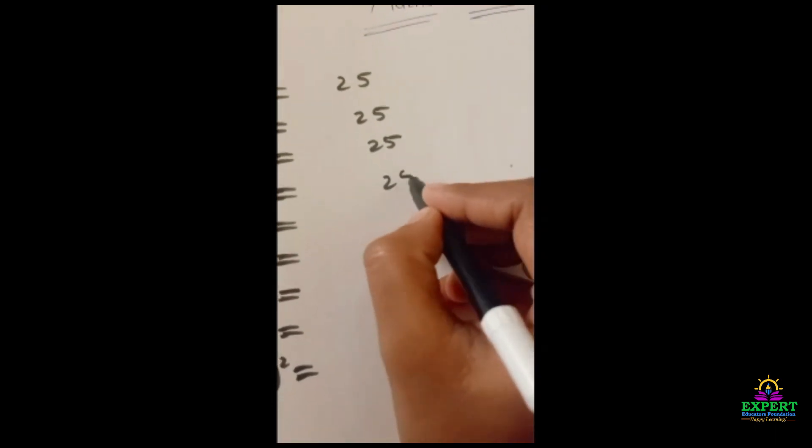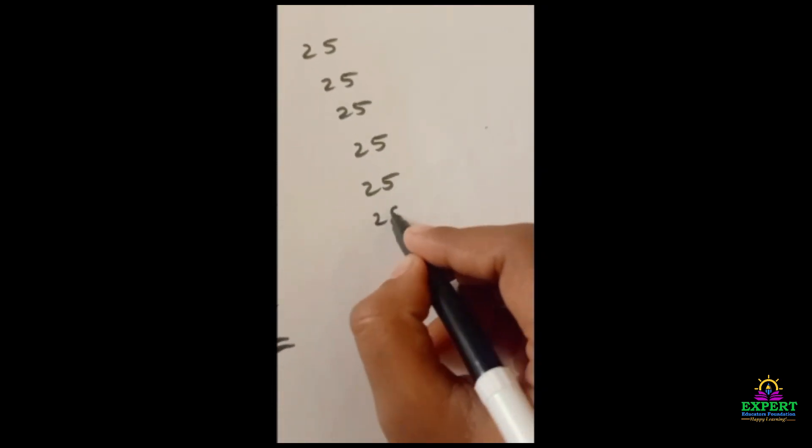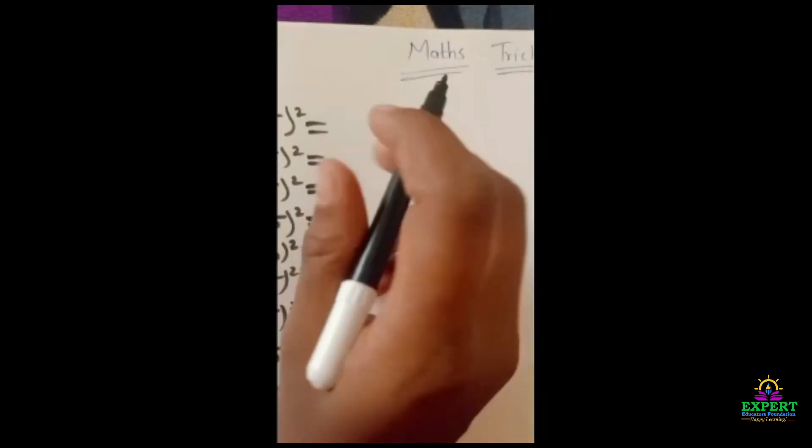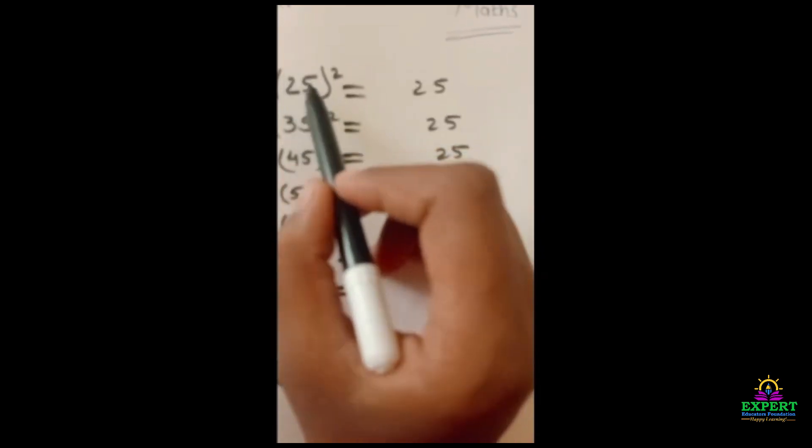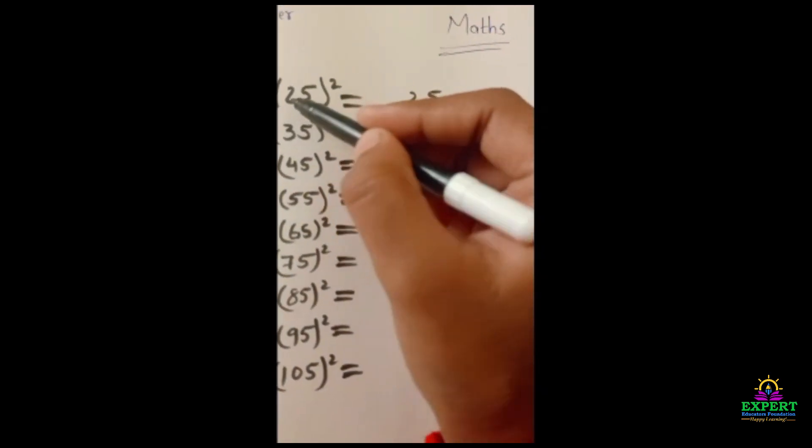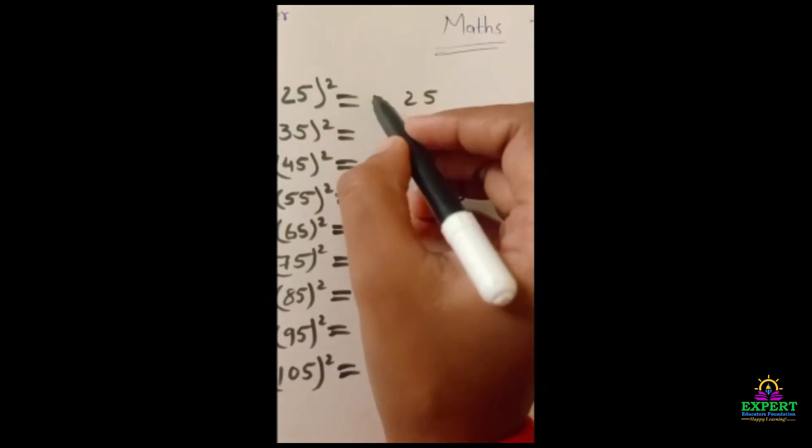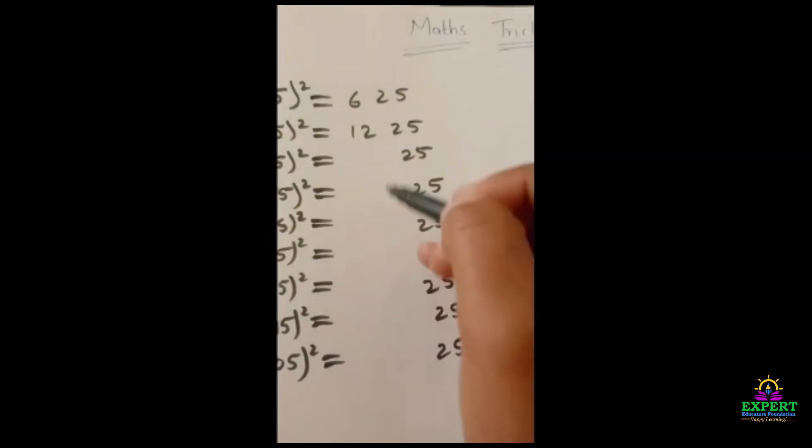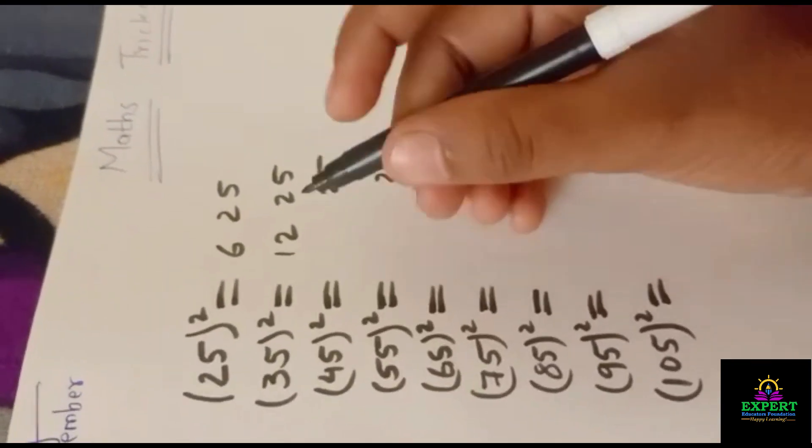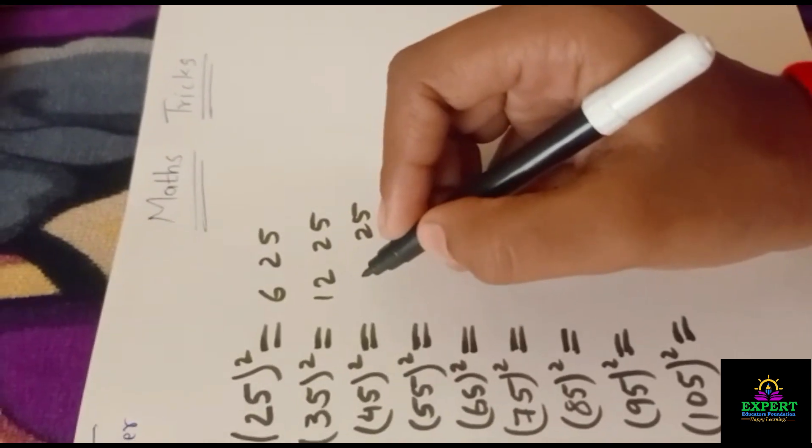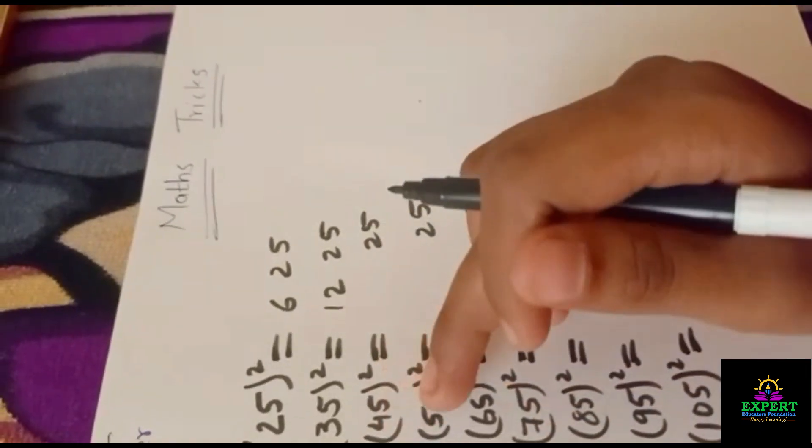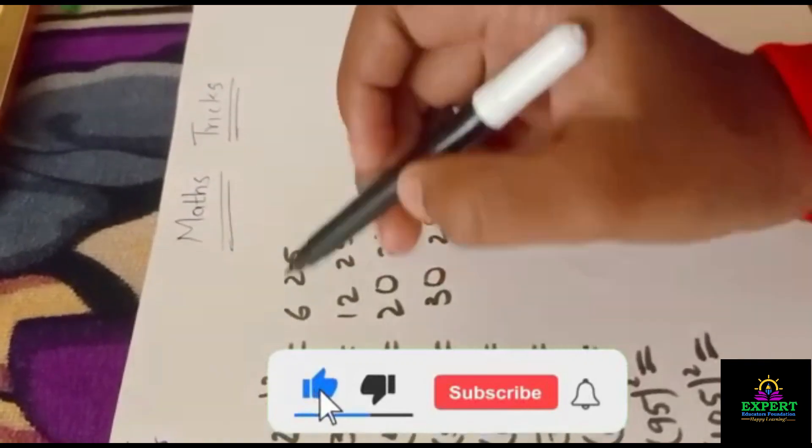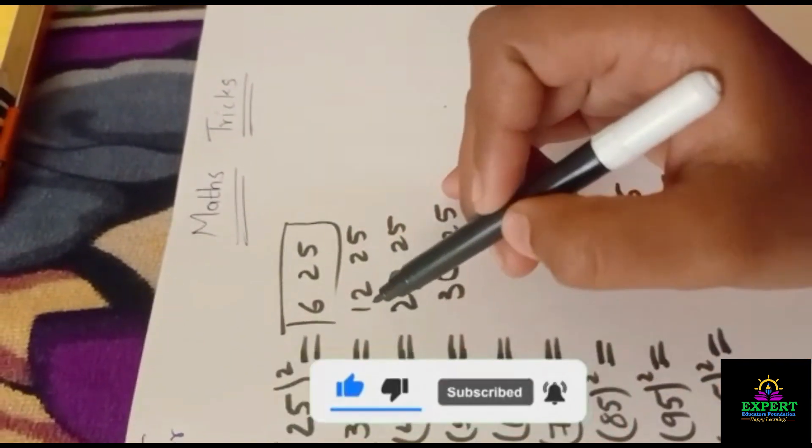Now what we have to do is the main point. See 2, we have to multiply 2 by the next number. It means 2 times 3 is 6. 3 times 4 is 12. In the same way, we have to write all these numbers' squares. See, 4 times 5 is 20, 5 times 6 is 30. This will be the answer, that is square of 25, square of 35. Like this, you can solve all these problems.